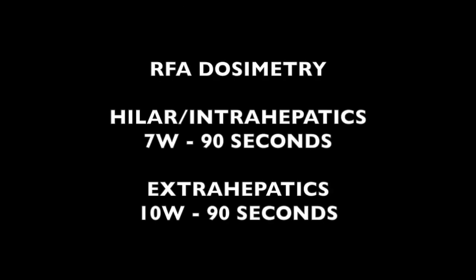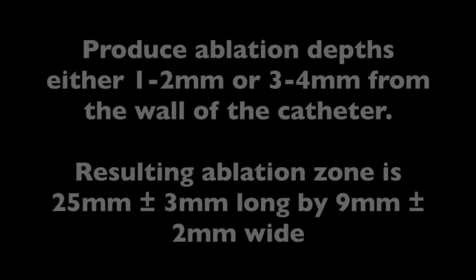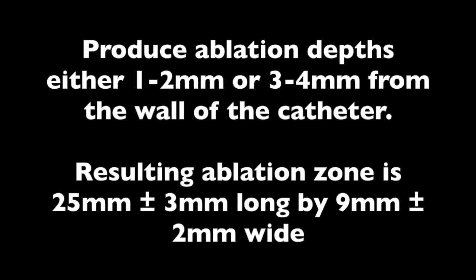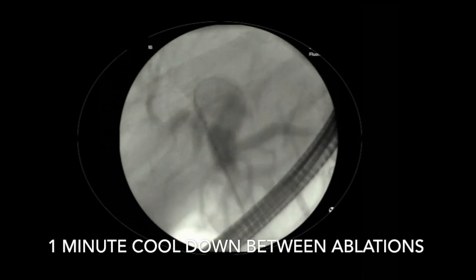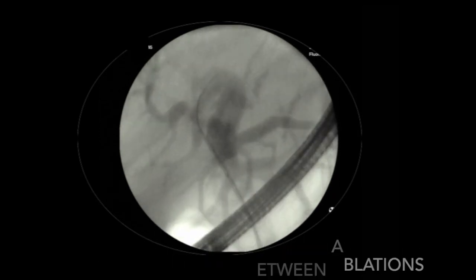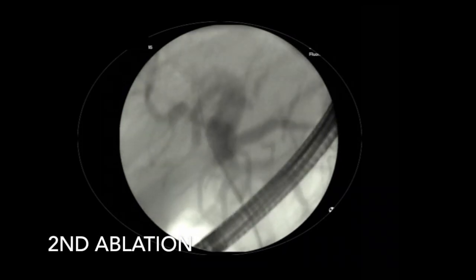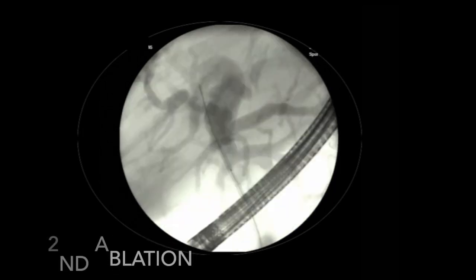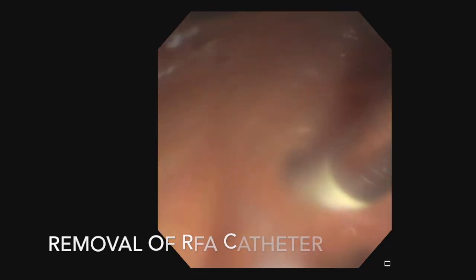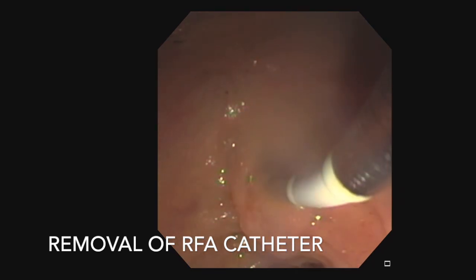After the one-minute cooldown period, we replace the position of the catheter. This is in the extrahepatic portion, down at the distal common hepatic duct. In this case, we use a 10-watt setting. When ablating at 10 watts, the catheter ablates to a depth of approximately 3 to 4 millimeters; at 7 watts, depth is 1 to 2 millimeters. The ablation dosimetry is approximately 90 seconds at the set wattage, depending upon location of probe placement.